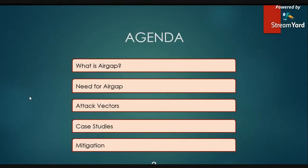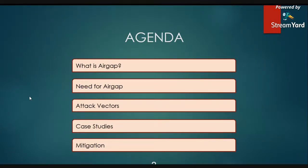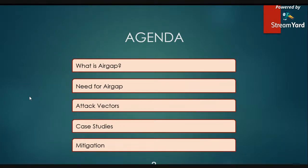The agenda for today: first, we'll understand what an air gap environment or network is. Then we'll discuss why we need such an expensive setup. Then we'll go through the different types of attack vectors — you can also call them covert channels. We'll go through two case studies, one which we performed ourselves and another taken from elsewhere but easily reproducible. Finally, we'll talk about mitigation techniques.